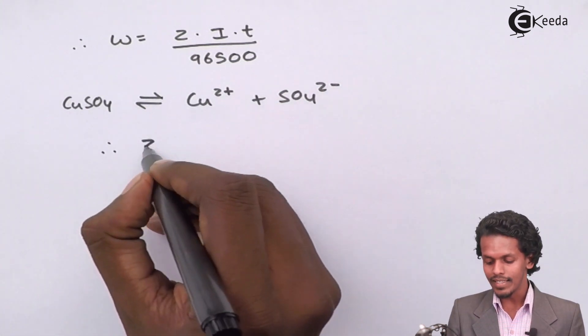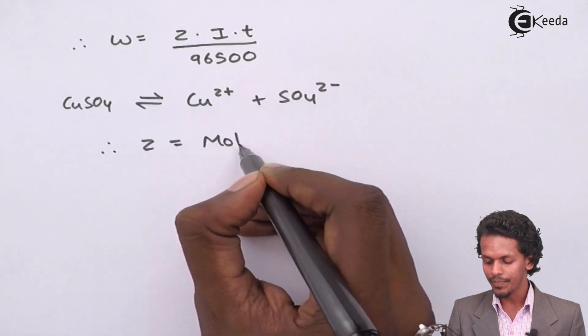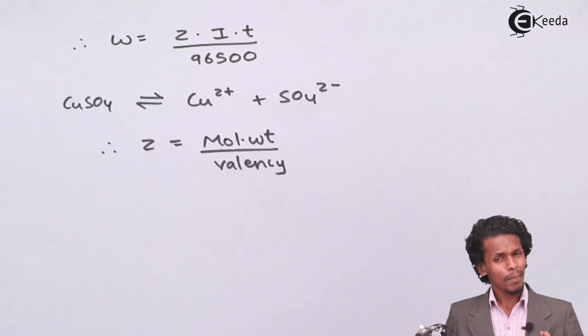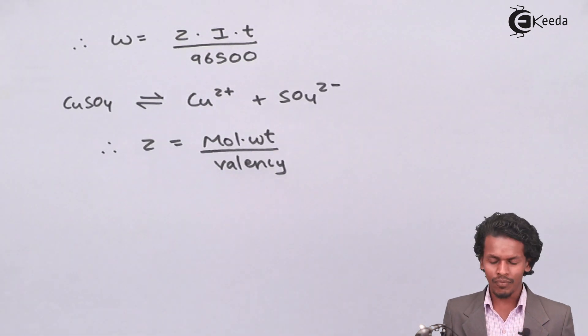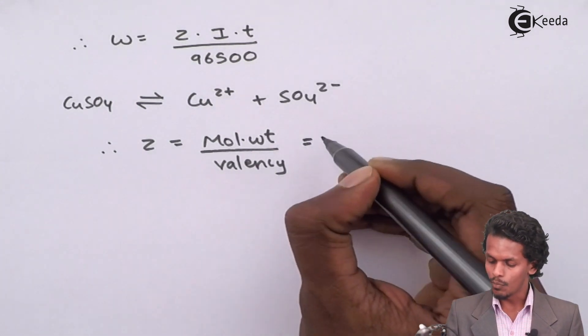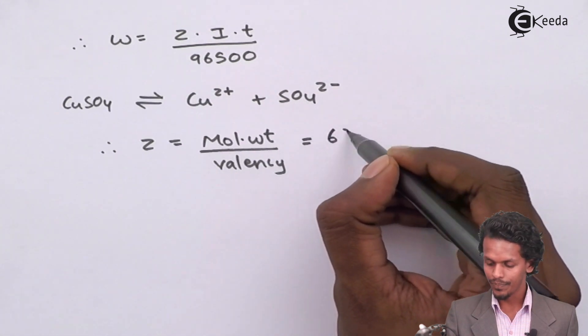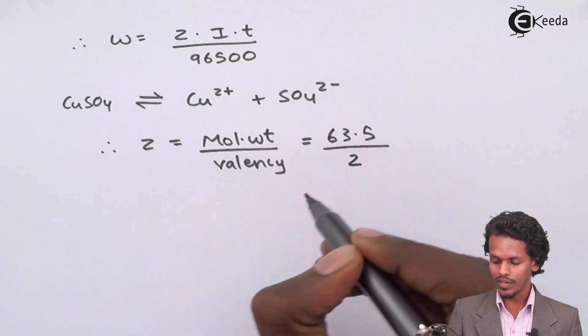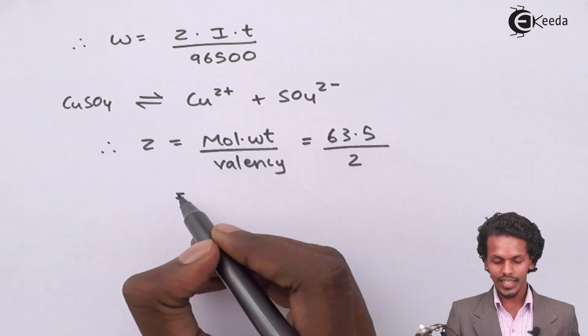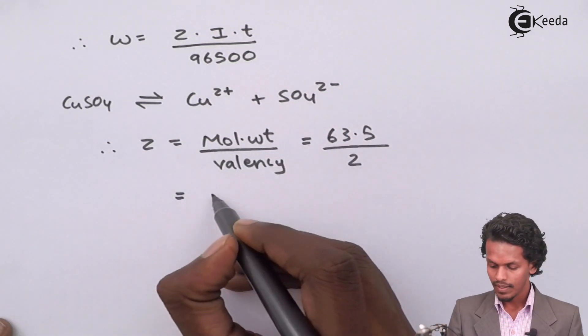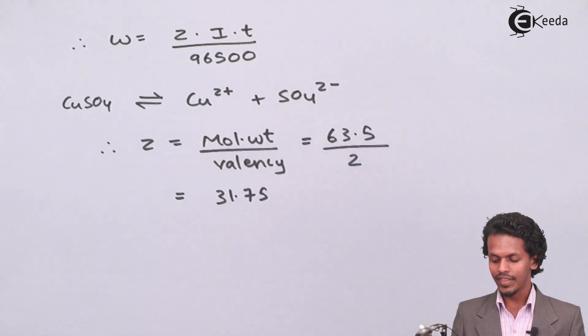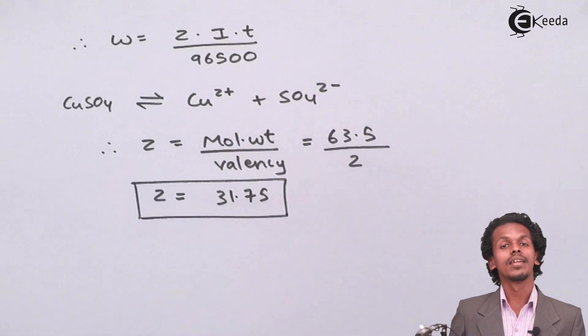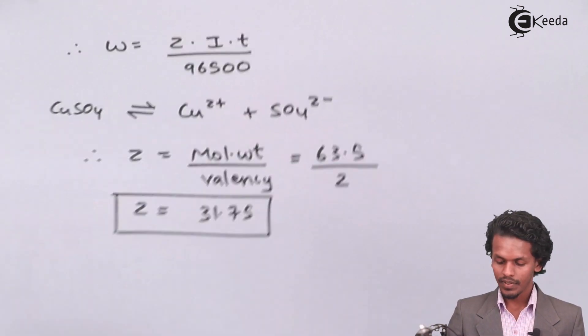So I could write it as Z equals molecular weight divided by valency of the metal in ionic form. Therefore, the molecular weight which is given to us as 63.5 divided by the valency of copper that is 2. So this will give us an answer of 31.75. And with the help of this, we could estimate what would be the current required to give this value.